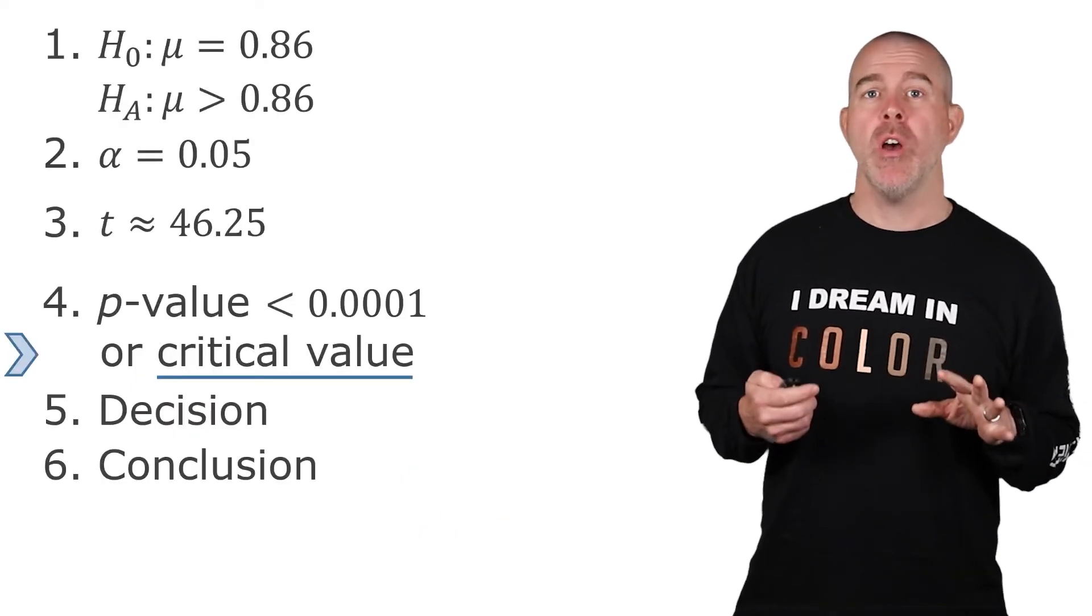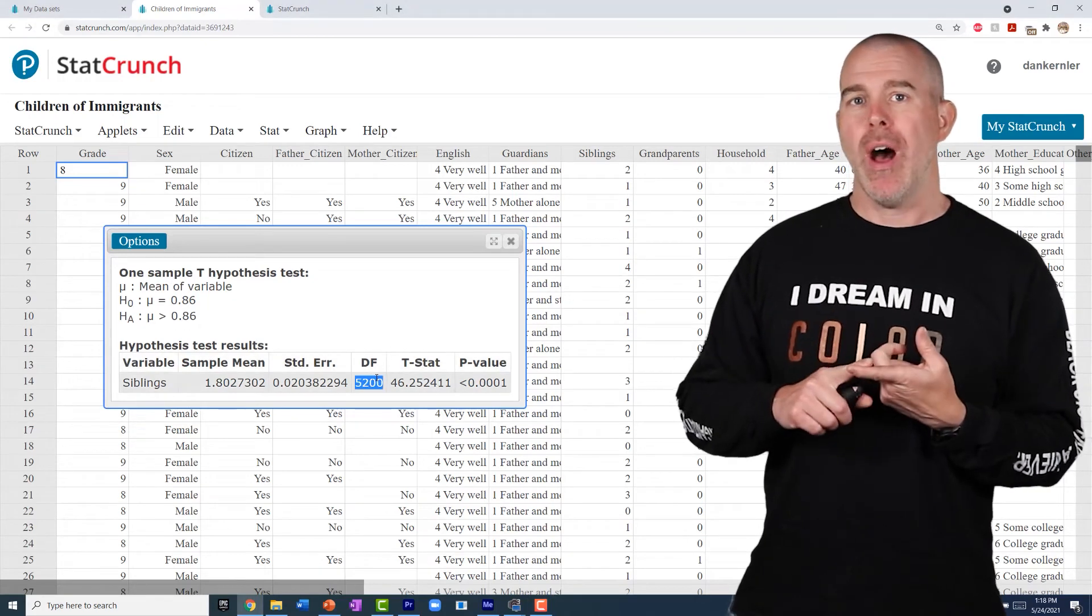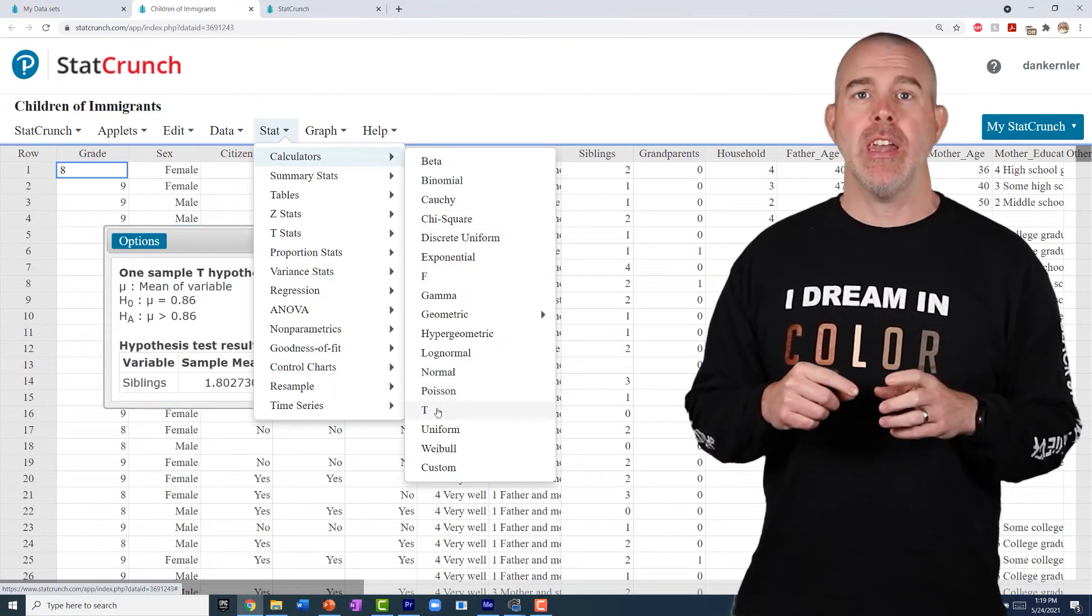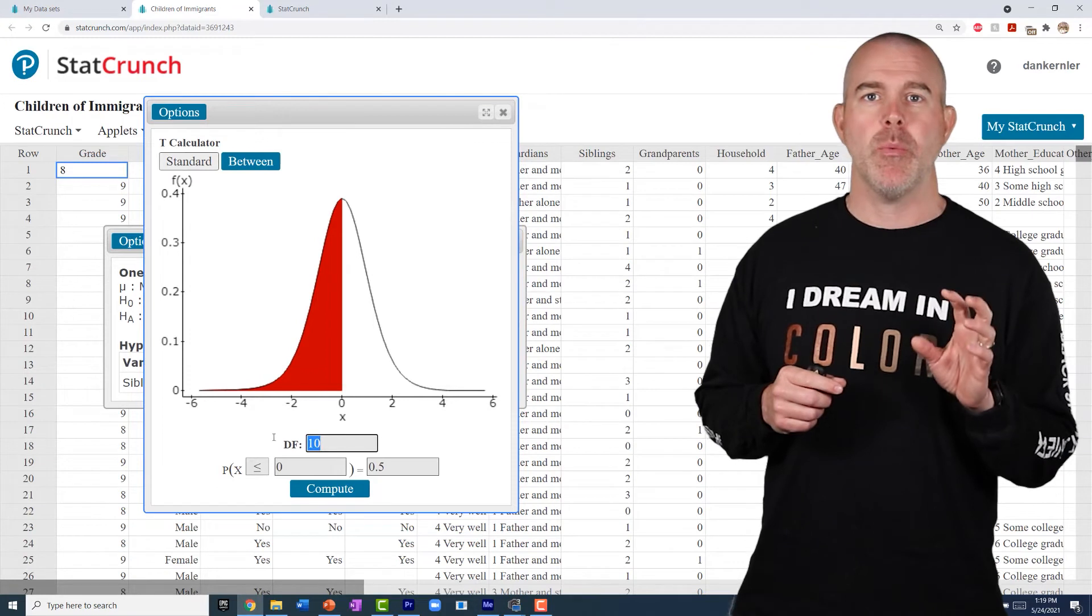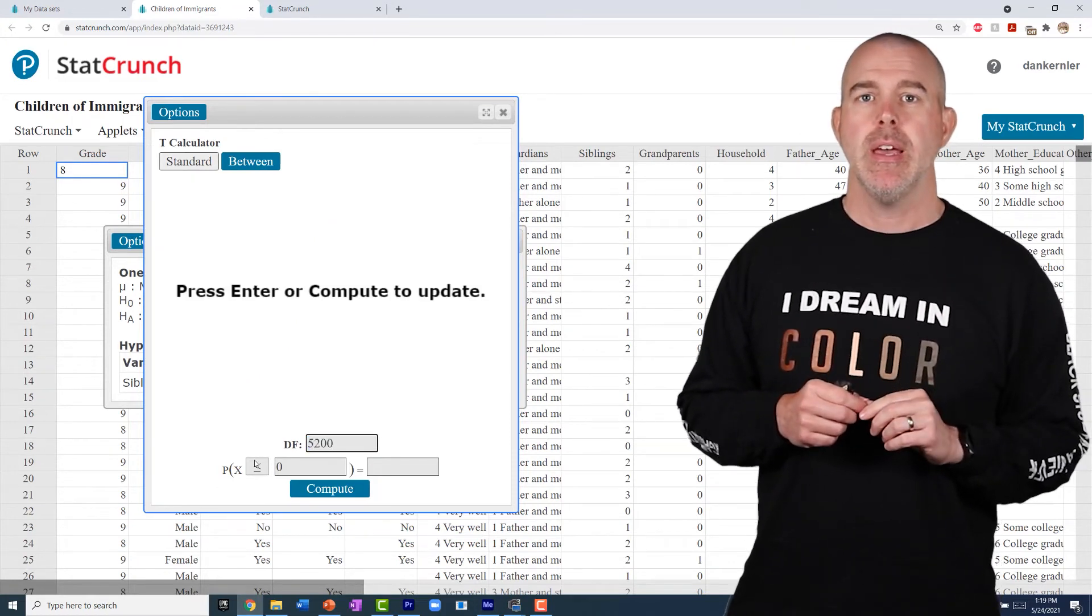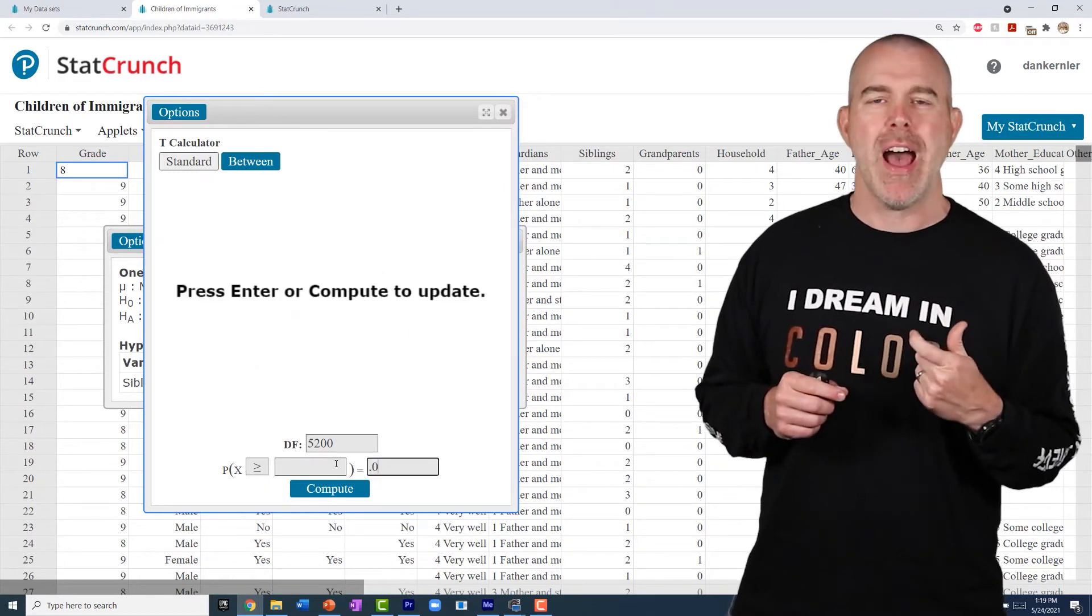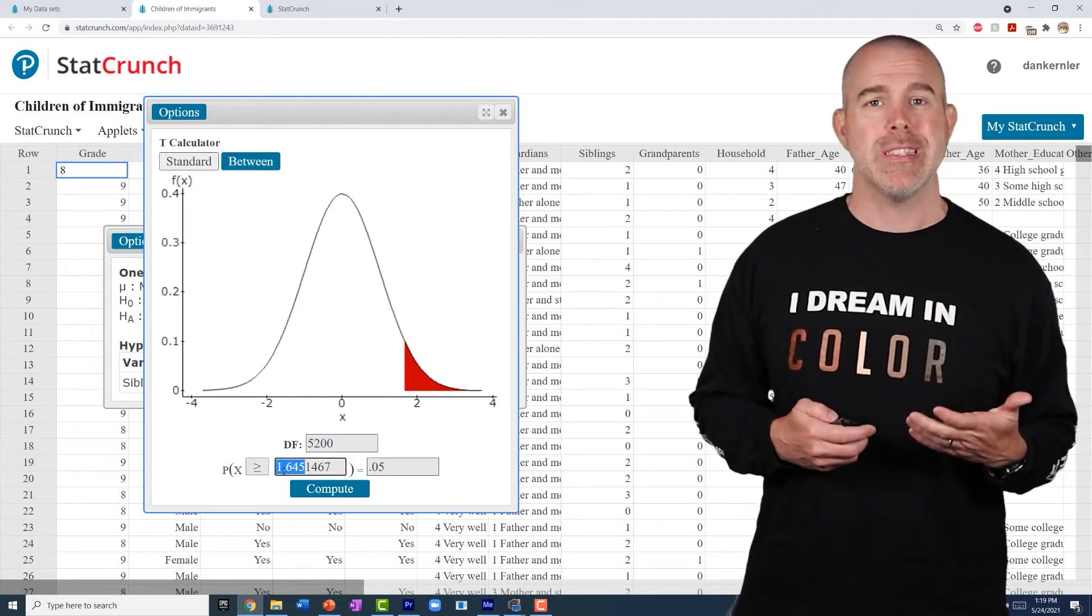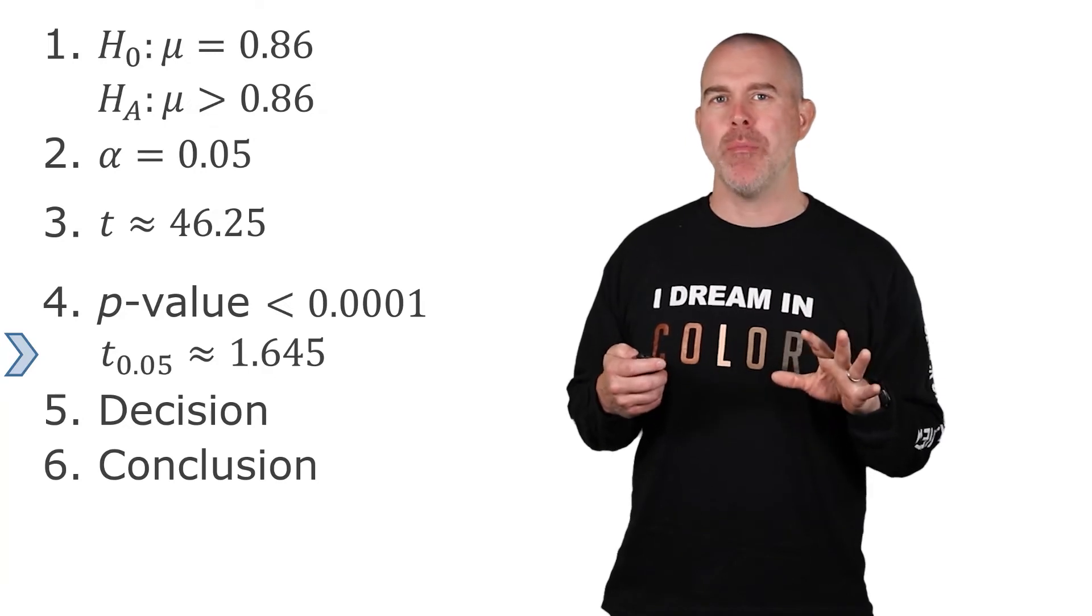So to get that critical value, we're going to go into StatCrunch. And what we'll do here is we'll go under the T calculator. So Stat Calculators T. And we want to put in the degrees of freedom. Now we know from our output previously that we have 5,200. 5,200 is our degrees of freedom. We want to find the area to the right. Ignore the results right here. We want to put 0.05 as the area to the right. And then we get our results, that 1.645. Now you might recognize this T 1.645. Like isn't that just the Z? Isn't that the same as the Z?